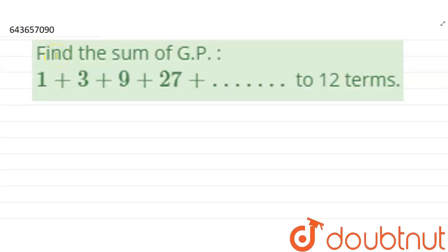Hello, so today's question is find the sum of GP. The series is given: 1 plus 3 plus 9 plus 27 and up to 12 terms.